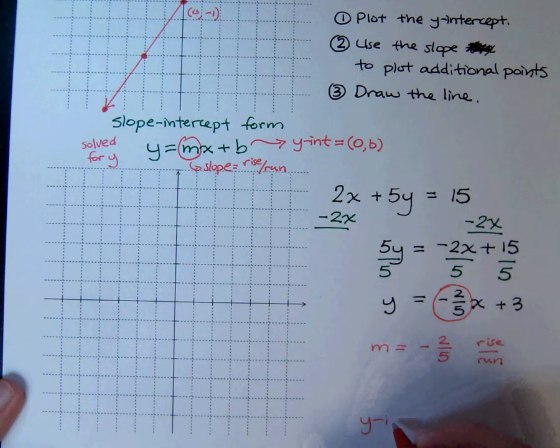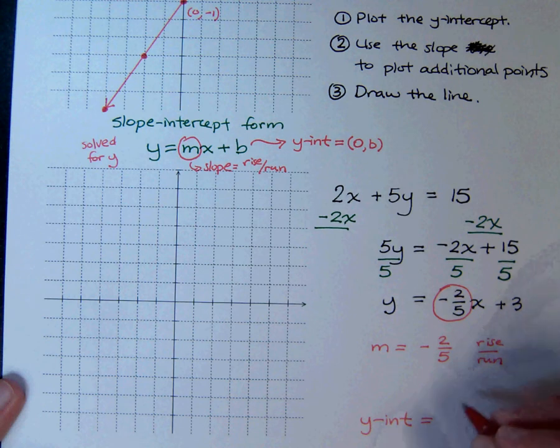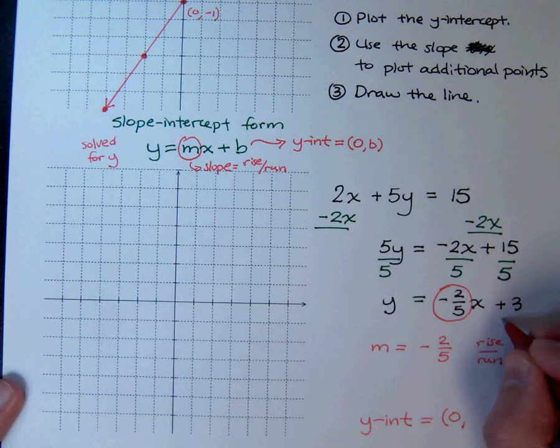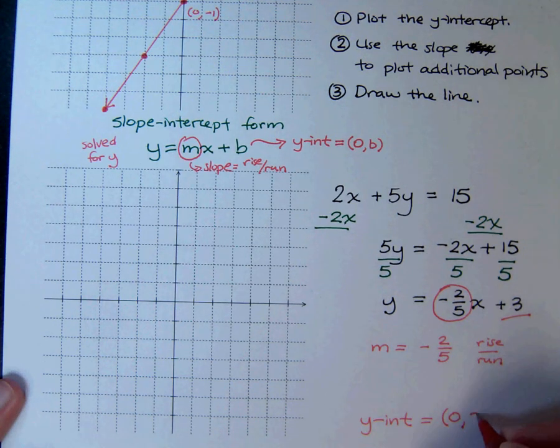And my y-intercept is the ordered pair, 0 and 3. The constant here tells you the y-coordinate for the y-intercept.